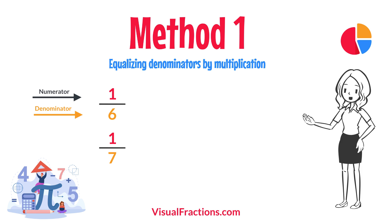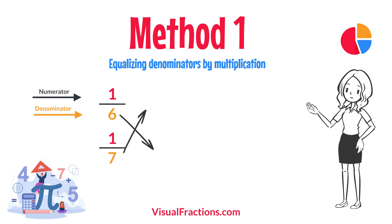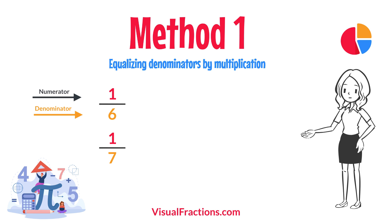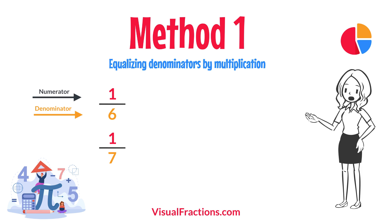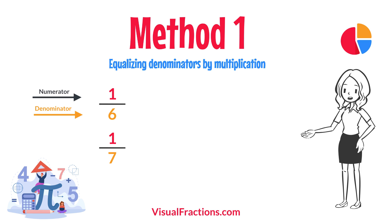First, let's equalize the denominators by multiplying each fraction's numerator and denominator by the other fraction's denominator. This method works by using the denominators of each fraction to create a common denominator, allowing us to compare the fractions directly.